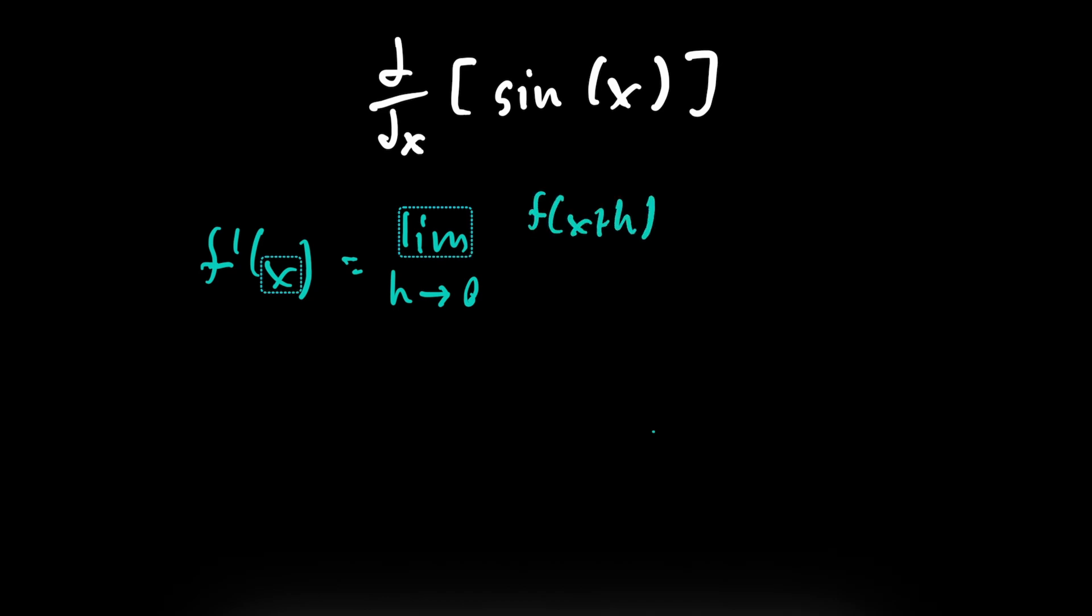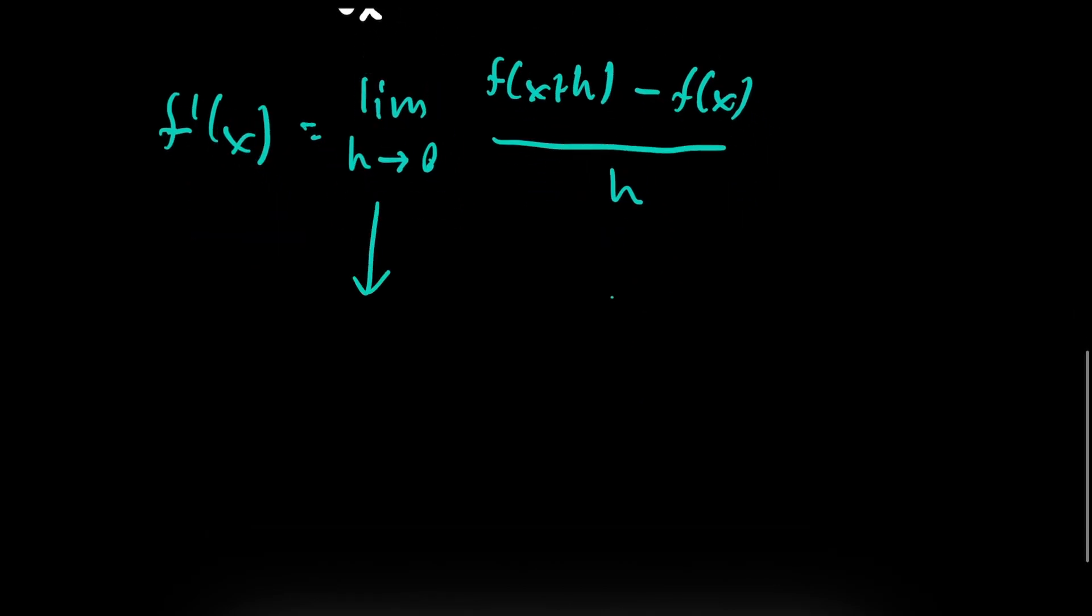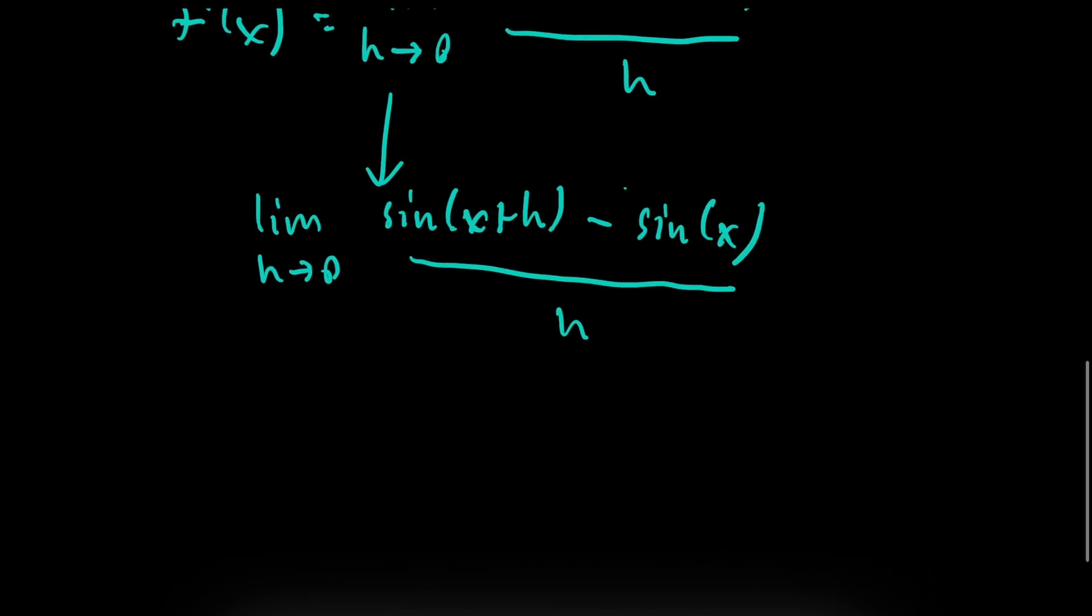So then f of x plus h minus f of x over h. And if we were to use sine of x in this case, the limit as h approaches 0 of sine of x plus h minus sine of x over h. And we can use our sine addition formula to rearrange this.